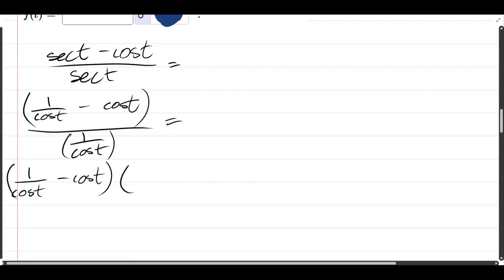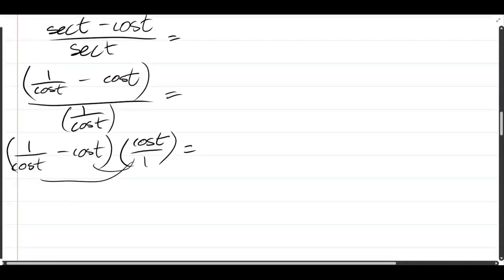So the reciprocal of 1 over cosine is cosine over 1. Now we multiply this. We're distributing this fraction into both of these. So in the 1 over cos times cos over 1, that cancels out to 1.